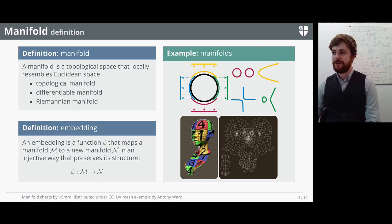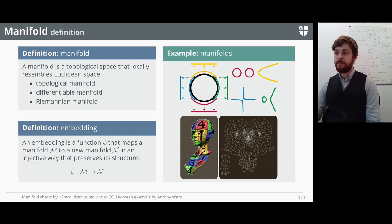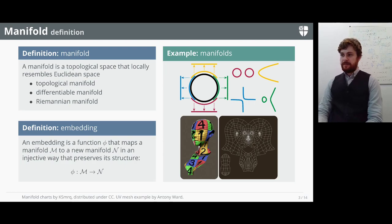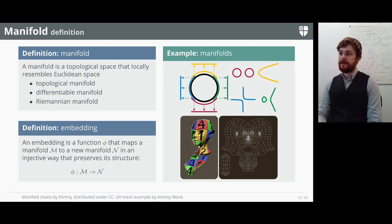Now let's look at a more mathematical view. Formally speaking, a manifold is a topological space that locally resembles Euclidean space. Formally, an n-dimensional manifold has a neighborhood that is homeomorphic to an n-dimensional Euclidean space. You can split up an n-dimensional manifold into patches where each patch locally resembles a Euclidean space.